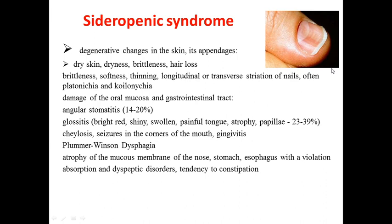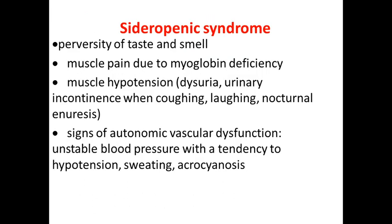Symptoms include angular stomatitis, glossitis — bright red, shiny, swollen, painful tongue with atrophy of papillae. Cheilosis and fissures in the corners of the mouth, gingivitis, and dysphagia may present with atrophy of mucous membranes and violation of absorption with dyspeptic disorders. There may also be a tendency to constipation.